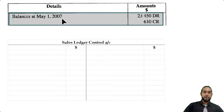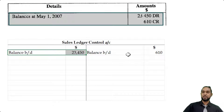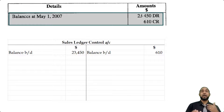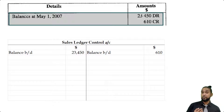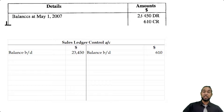It follows double entry rules for assets — debit to increase, credit to decrease. The balance at the start shows 23,420 on the debit side and 610 on the credit side. Assets usually have debit balances, but sometimes they can have credit balances, which implies that we owe our debtors some money — maybe they overpaid or there's a refund due.